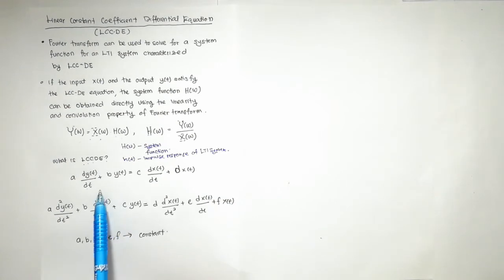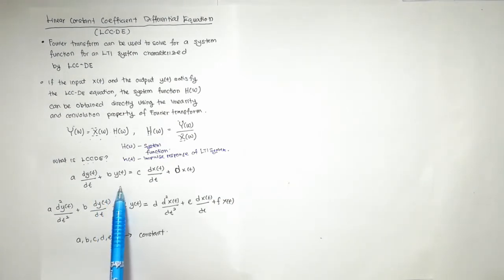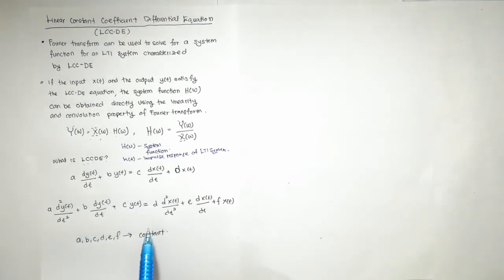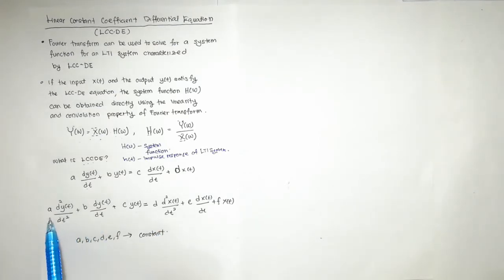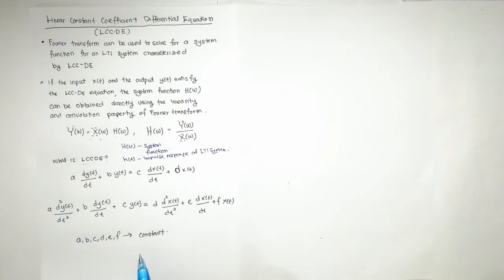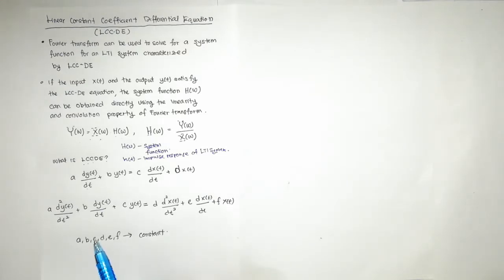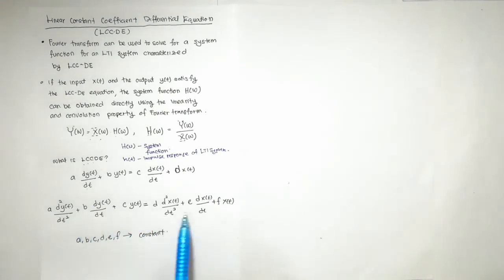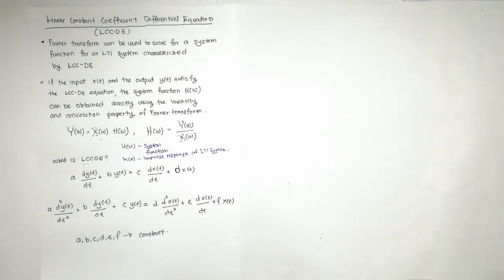This is what we call a first order linear constant coefficient differential equation. We can also have a second order linear differential equation, where the coefficients A, B, C, D, and E are all constant values. The key point for LCCDE is that the coefficient of each term in the equation is a constant value.